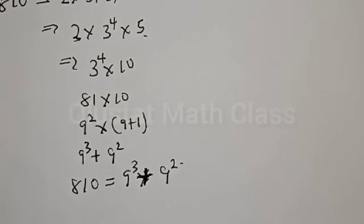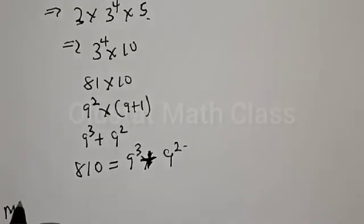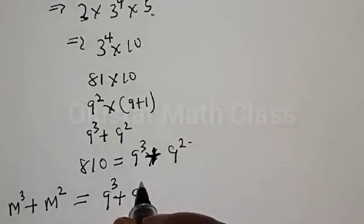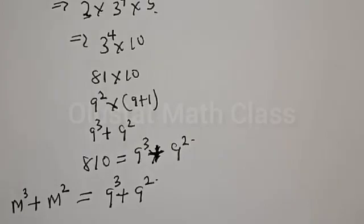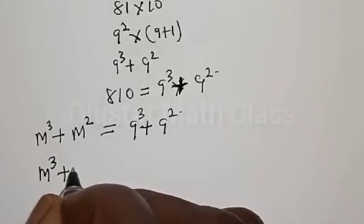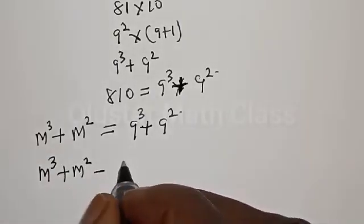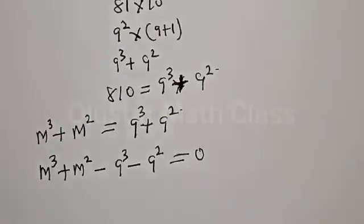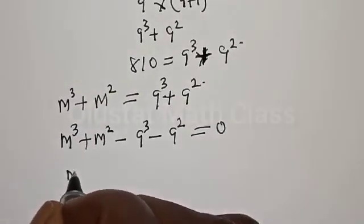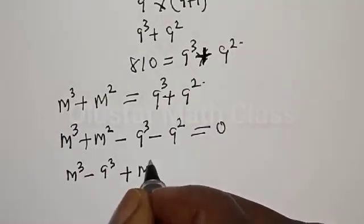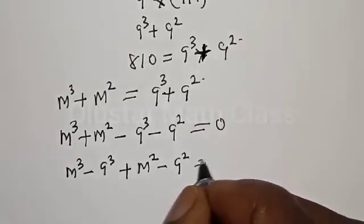Now let's substitute back to the main equation. We have MQ plus M squared equal to 9 cubed plus 9 squared. Let's equate it to 0. So we have MQ plus M squared minus 9 cubed minus 9 squared equal to 0. This can be rearranged as MQ minus 9 cubed, then plus M squared minus 9 squared, equal to 0.